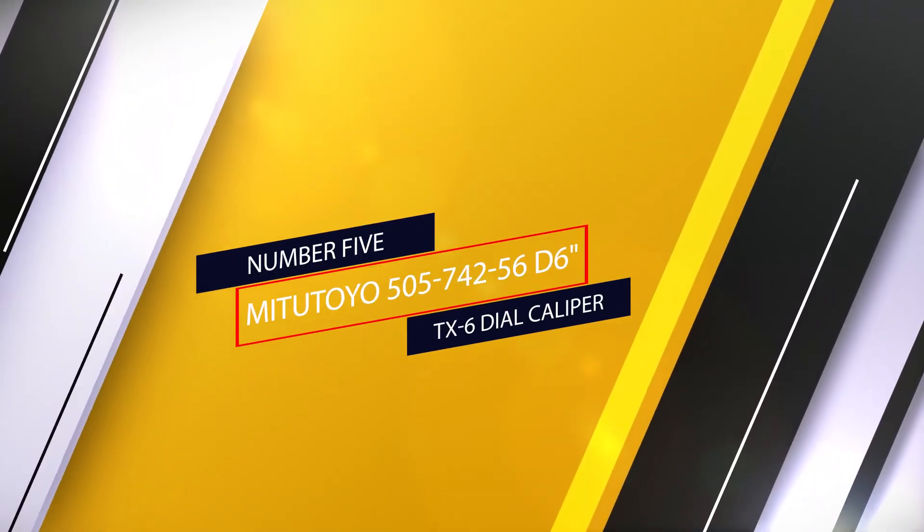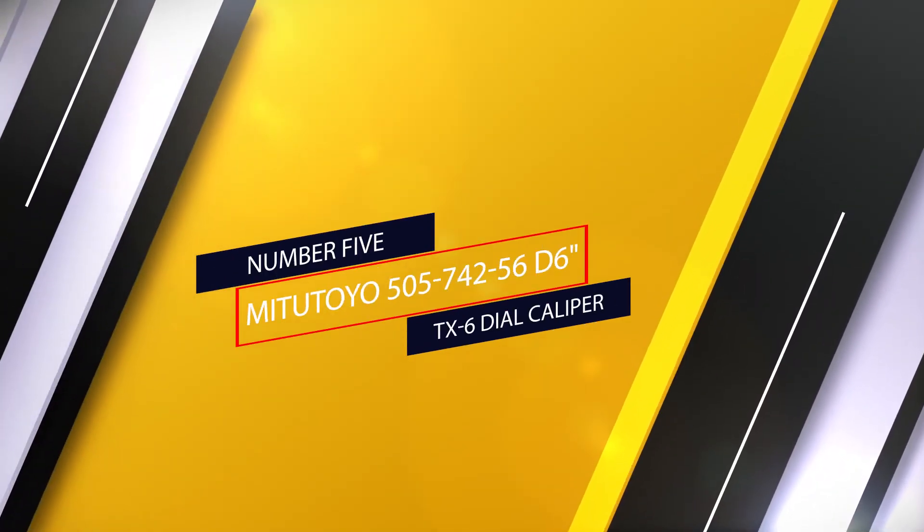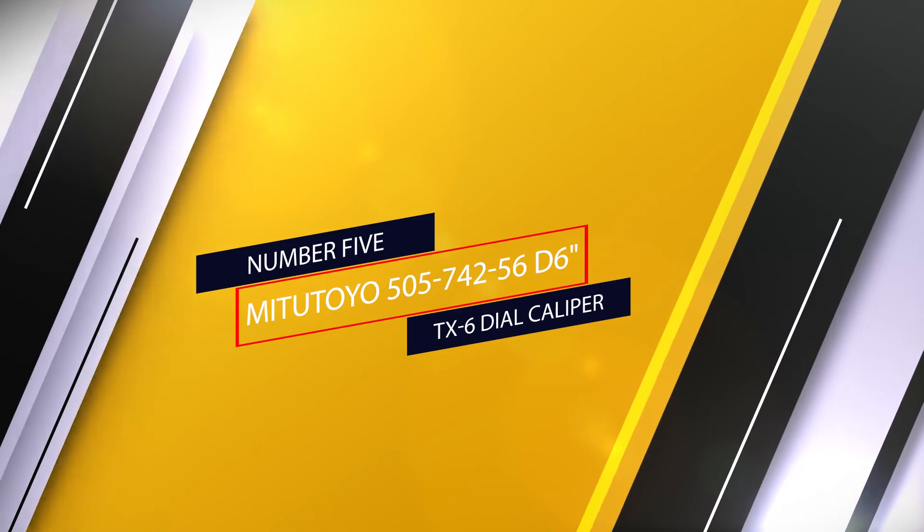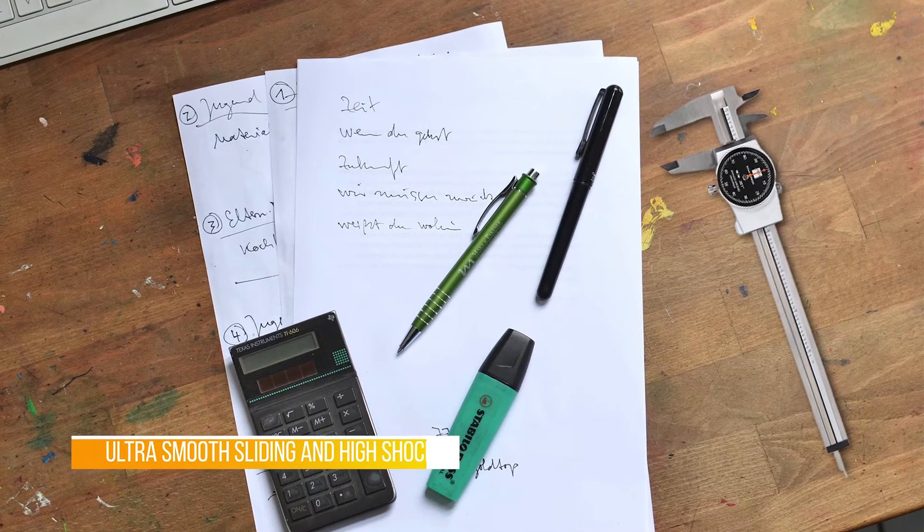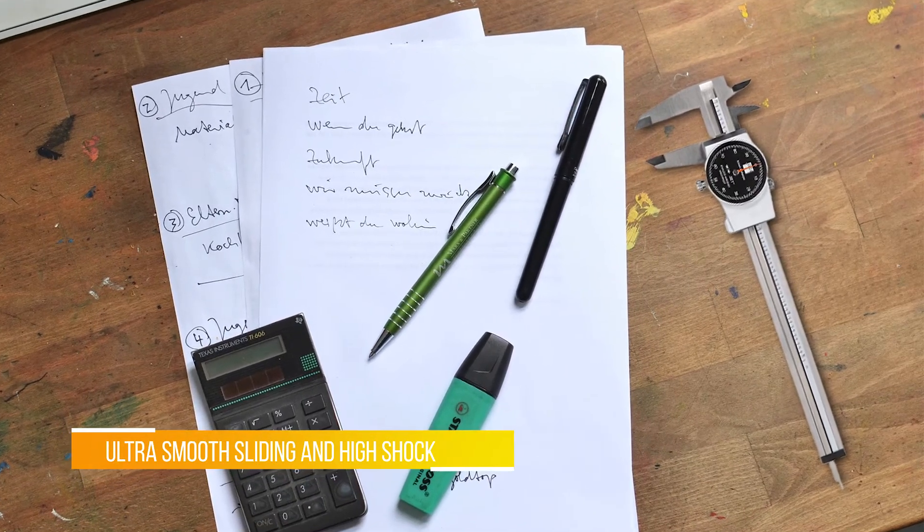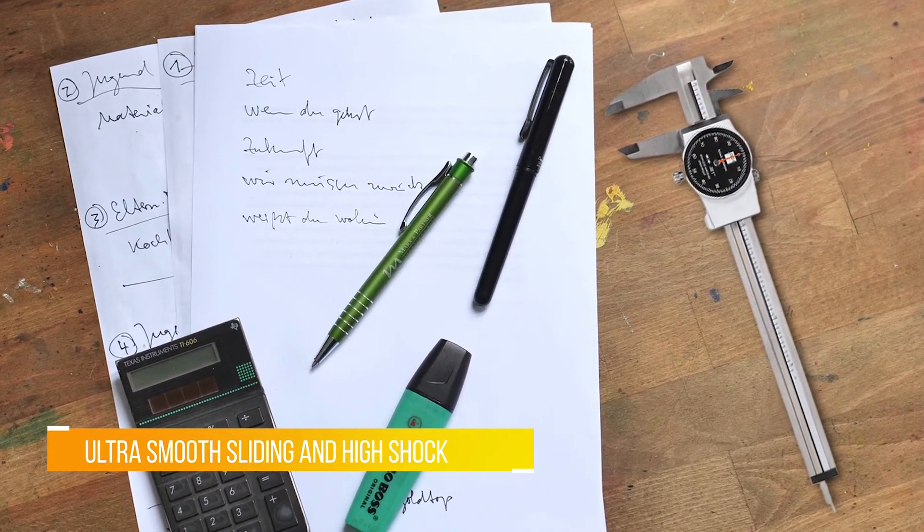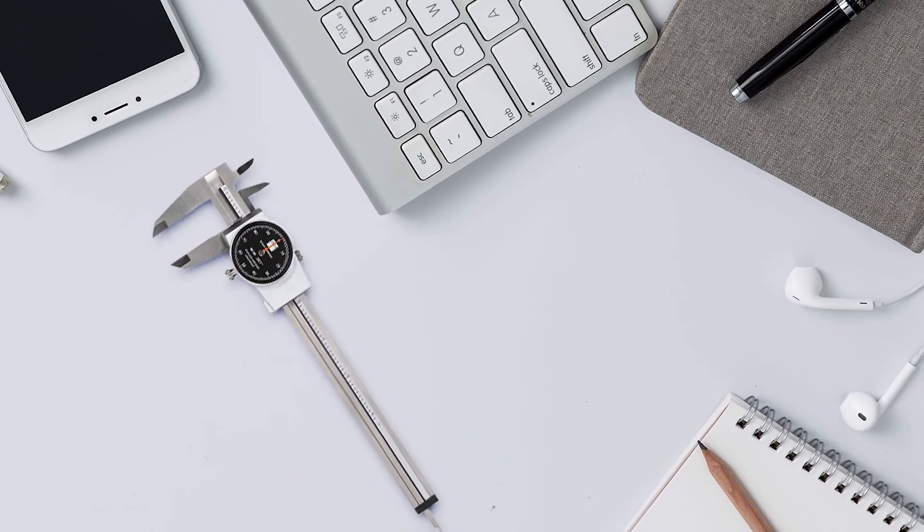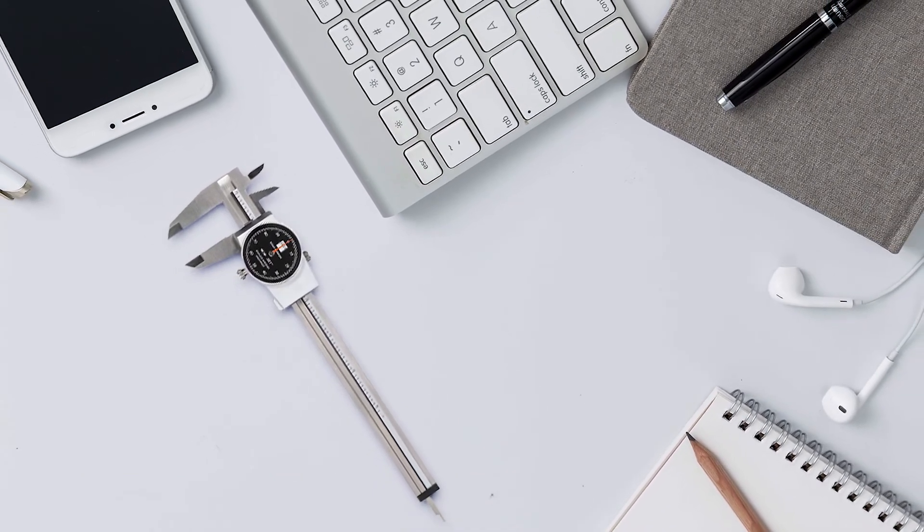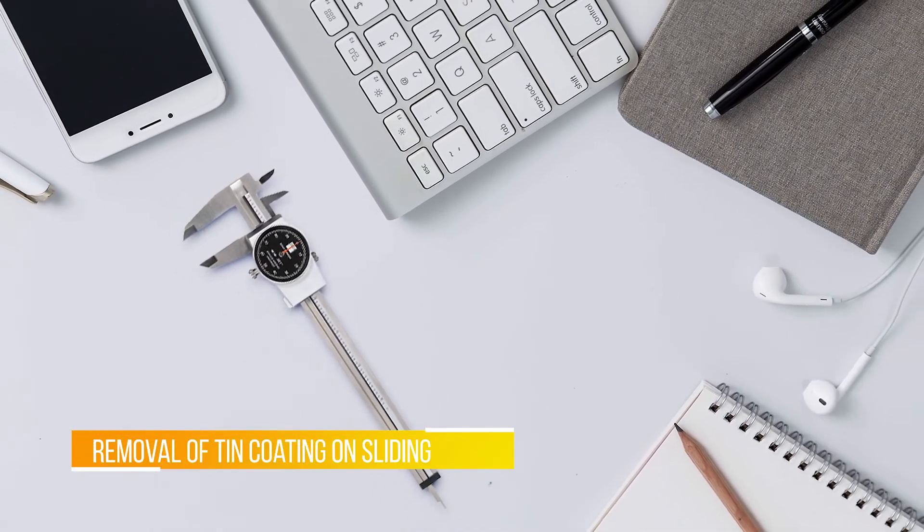Number five: Mitutoyo 505-742-56D6-TX6 dial caliper. When it comes to dial calipers, you really can't beat this Mitutoyo six-inch dial caliper. This model is manufactured in Brazil and lauded by the tool community for being well-made, accurate, and one of the smoothest as far as operation is concerned. You'll love the feel, fit, and finish of this caliper.